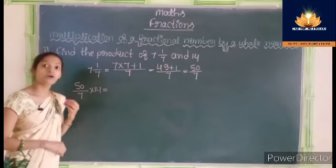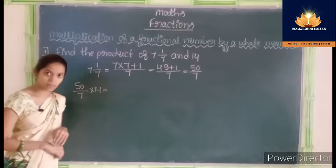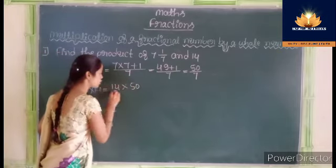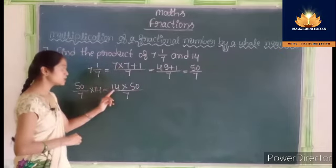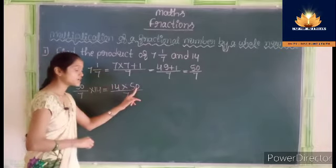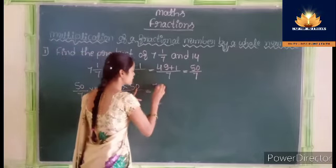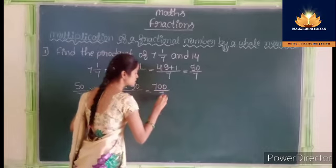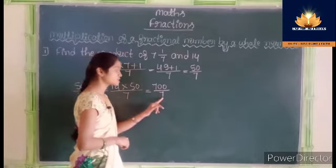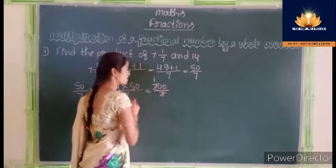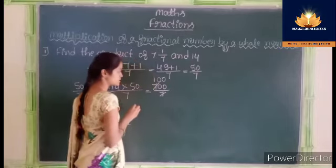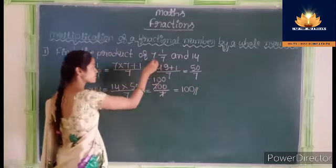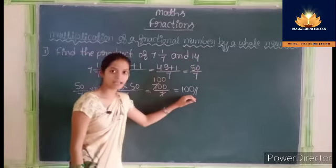Apply the formula: whole number into numerator by denominator. Here the whole number is 14, the numerator is 50, and the denominator is 7. Multiply 14 and 50: 14 fives are 70, write 0 on the right side giving 700, divided by 7. 700 divided by 7 gives 100. So when we multiply 7 and 1 upon 7 by 14, we get 100 as a product.